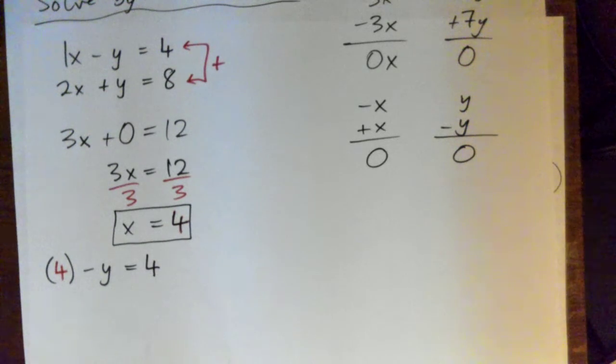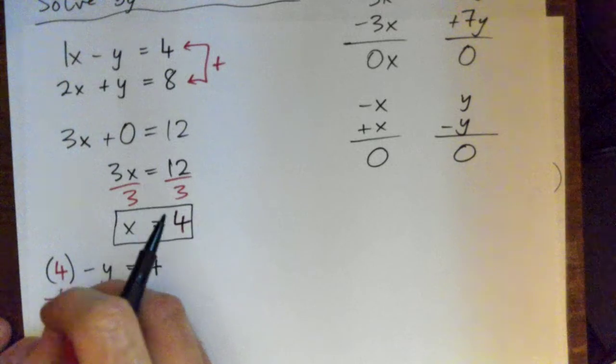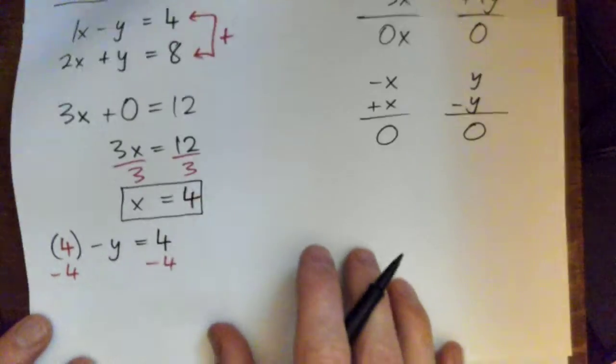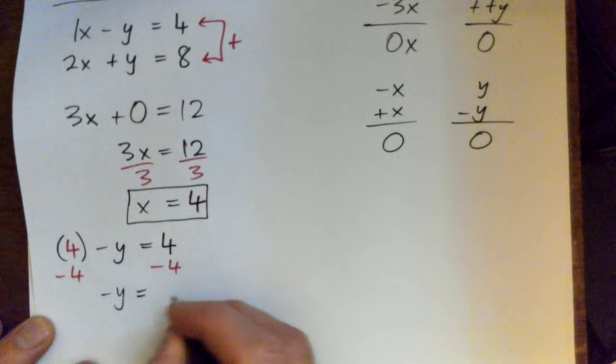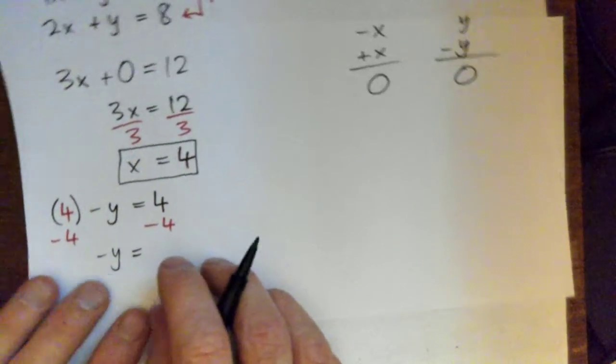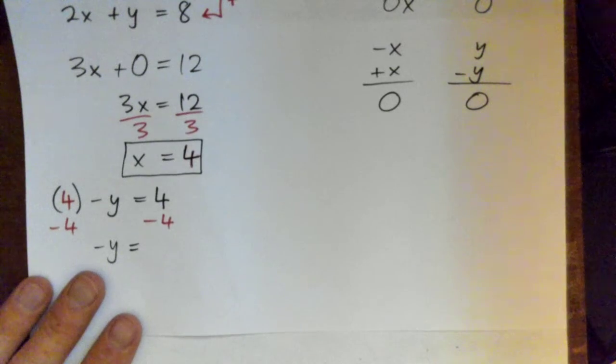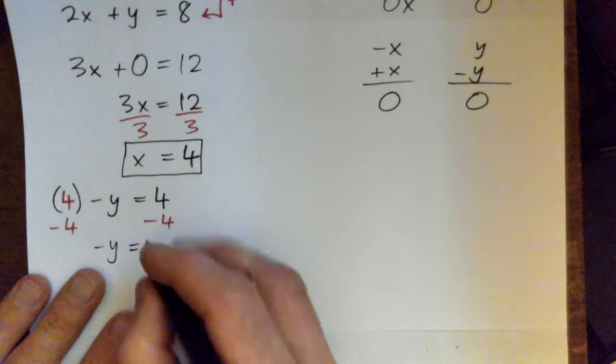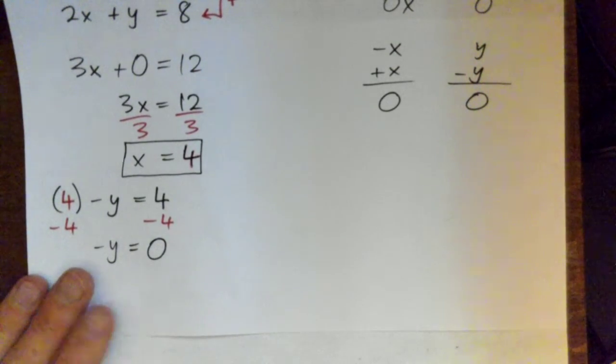No problem. So we're going to subtract 4 from both sides, and we get negative y equals 4 minus 4, which is 0. Negative y equals 0, okay with that?